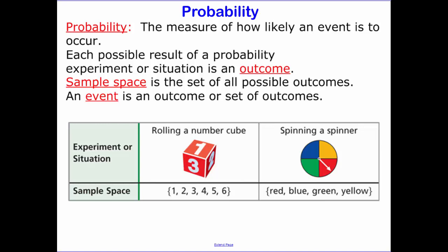Each possible result of a probability experiment or situation is called an outcome. The sample space is the set of all possible outcomes.